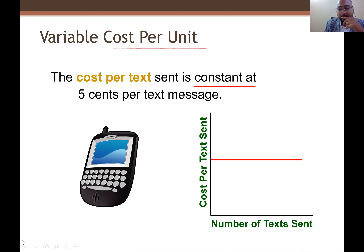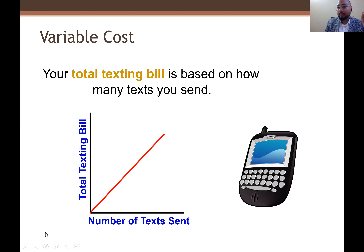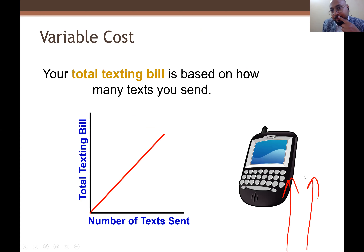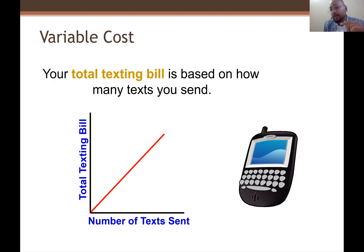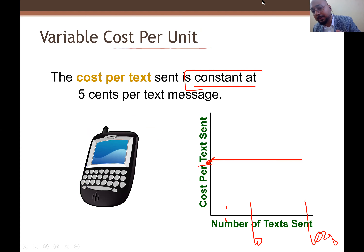Variable cost per unit — its behavior is constant. Whether you send one message or ten messages or a thousand messages, the cost per text remains five cents. So on a total basis, variable cost behavior is: quantity increases, cost increases. But when you convert variable cost to per unit, the per unit cost stays the same.